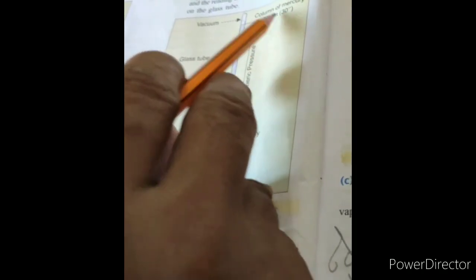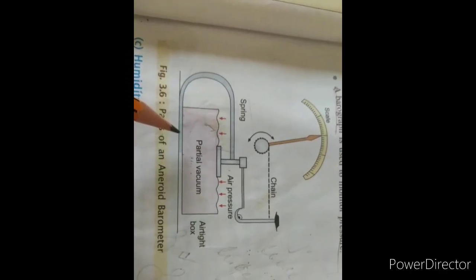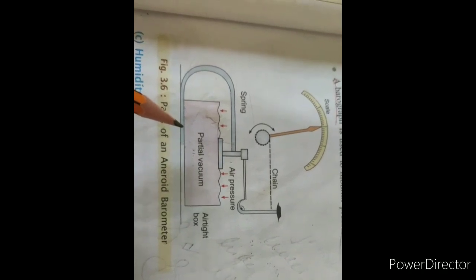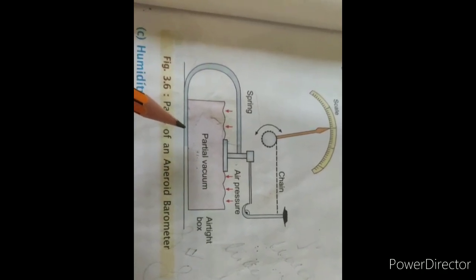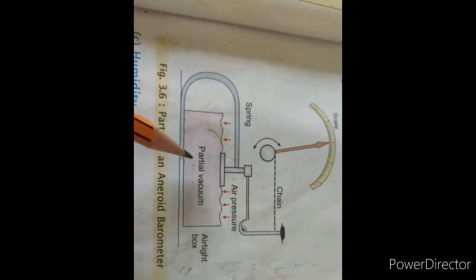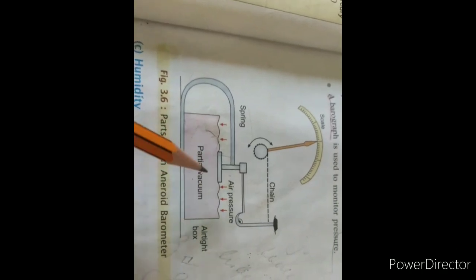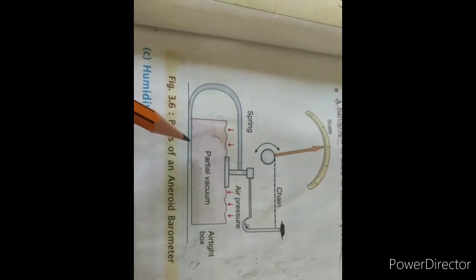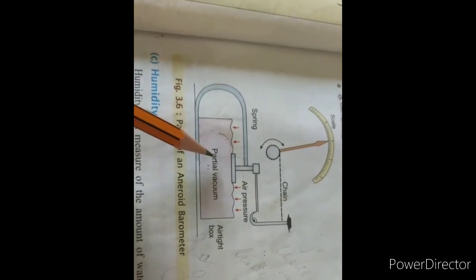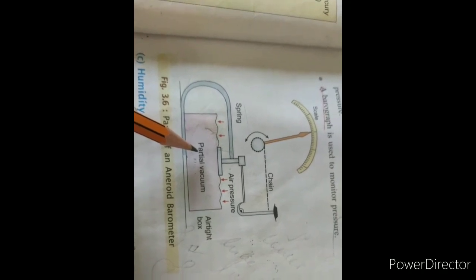This is equivalent to 76 centimeters of mercury column. Another instrument used to measure atmospheric pressure is known as the aneroid barometer. You can see the structure and the inside structure of the aneroid barometer. It is more popular than the mercury barometer.